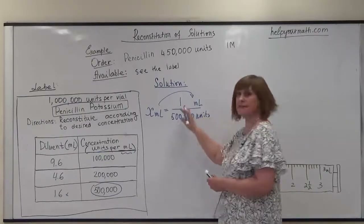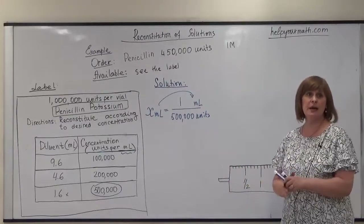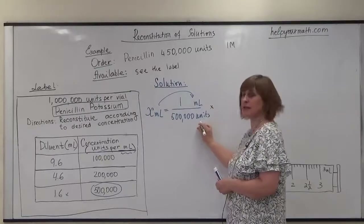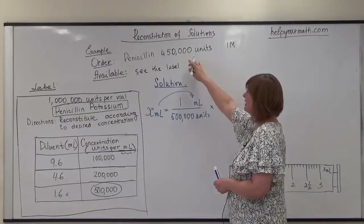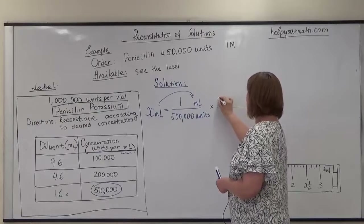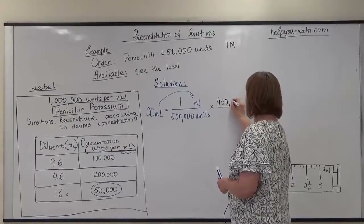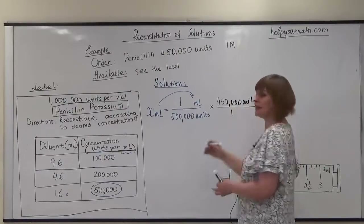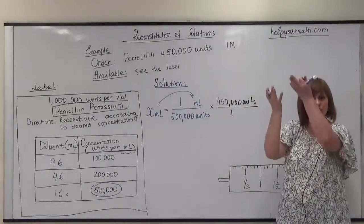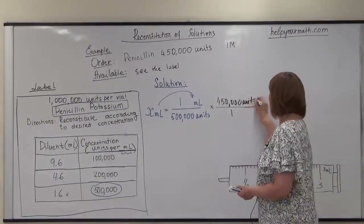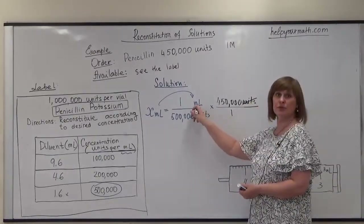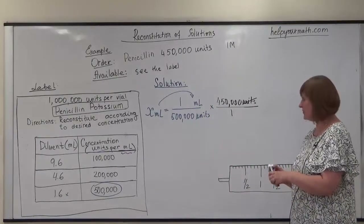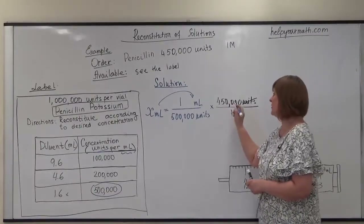This is a very important start. Once you set up the first ratio, you focus on canceling the units. We want to cancel units, and we know our order is 450,000 units — keep that over 1 to force it into the numerator so we can cancel units. Let's double-check the milliliters remaining, then start reducing. We can reduce 1, 2, 3, 4 zeros.